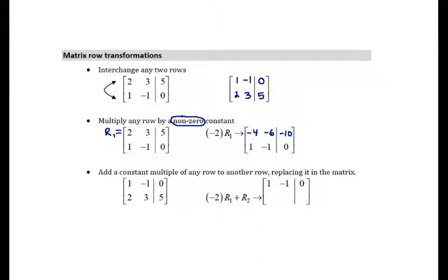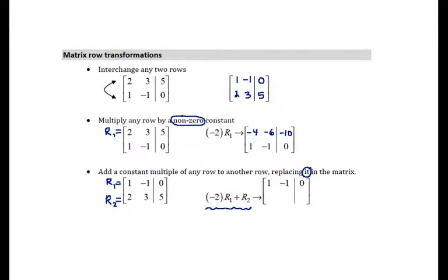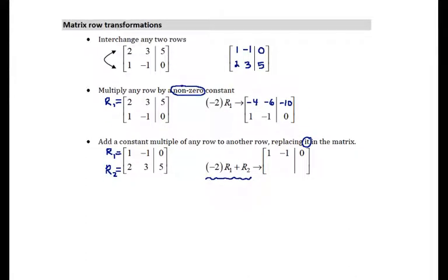The third type of transformation is the most complicated, and that is the one that's also the most useful. This is adding a constant multiple of any row to another row, replacing it in the matrix. When I say replacing it, I really mean that either of the two rows that went into this computation can get replaced. We just need to make sure we don't replace the other row if there happens to be another row. So in this case, row 1, or my R1, is what I started with in the first row. R2 refers to what I started with in the second row. So I am going to perform this operation, which I'll do down kind of off to the side here, and then put the result in.